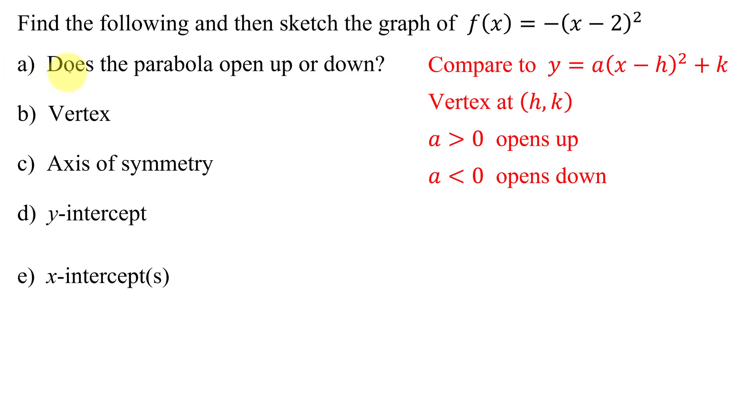So the first piece of information I need to find is does the parabola open up or down? That depends on a, the leading coefficient. What is a in this case? In this case, a is negative 1, it is less than 0, it is negative, and that means the parabola is going to open down.